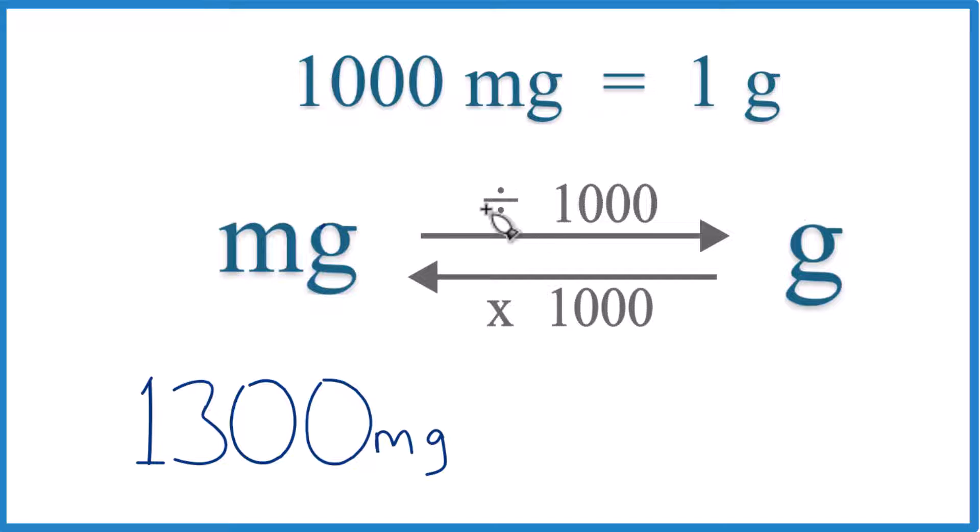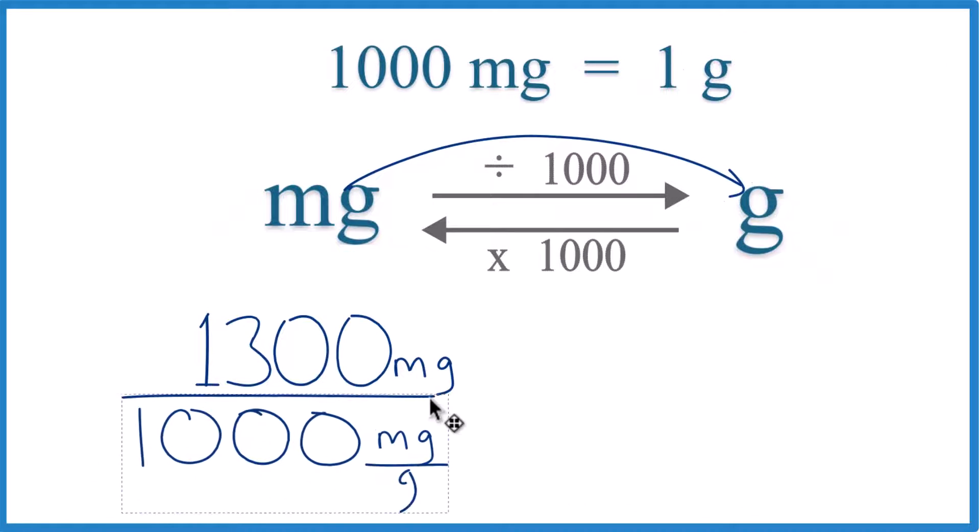So this is a conversion factor, and we need it when we go from milligrams to grams or grams to milligrams. Since we have 1,300 milligrams, we're going to grams. We're going to divide by 1,000, like this.